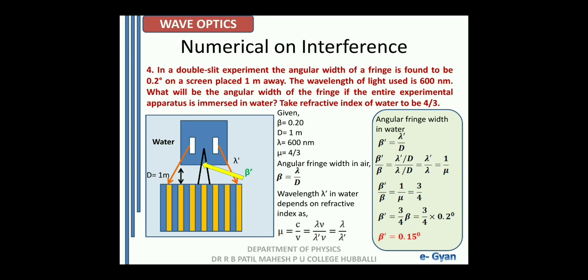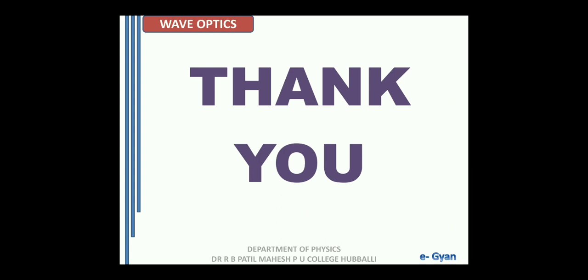So today we have tried to solve the numericals on the wave nature, the Doppler effect, and the interference. In the next session we will continue our discussion on numericals on interference again, and then we will go with the problems on diffraction and polarization. Thank you.